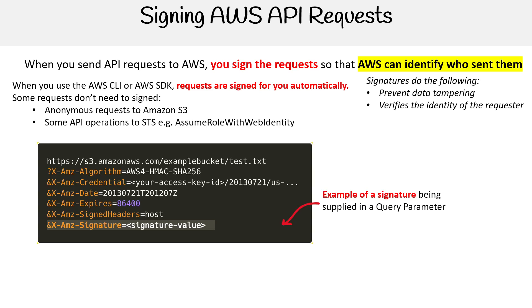Here is an example of a signature being used. In this example, it's placed within a query parameter — there are a few different ways you can specify it, but that's where it would go. When you use S3 or other services and you inspect the URLs, you're definitely going to see the signatures there.